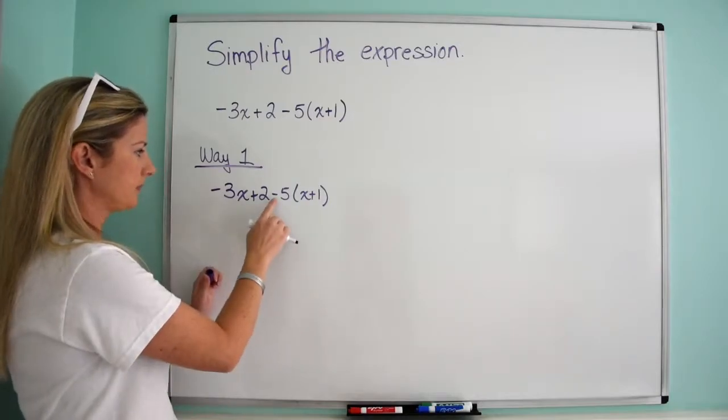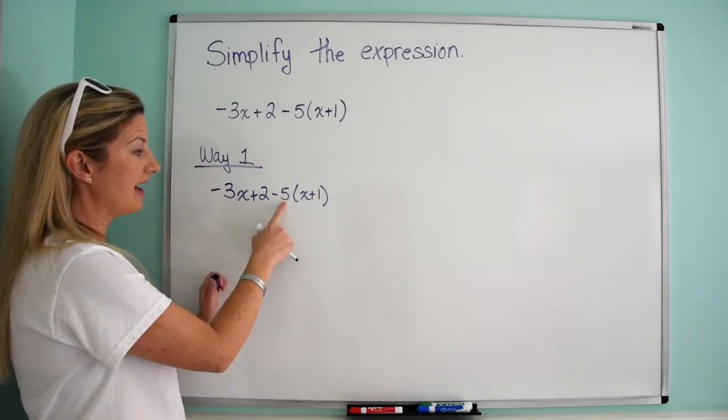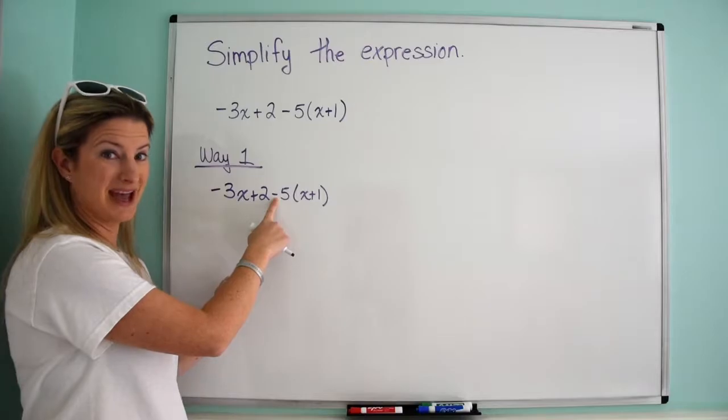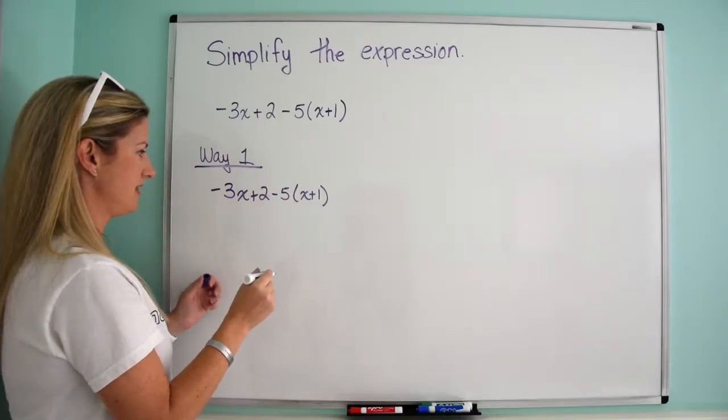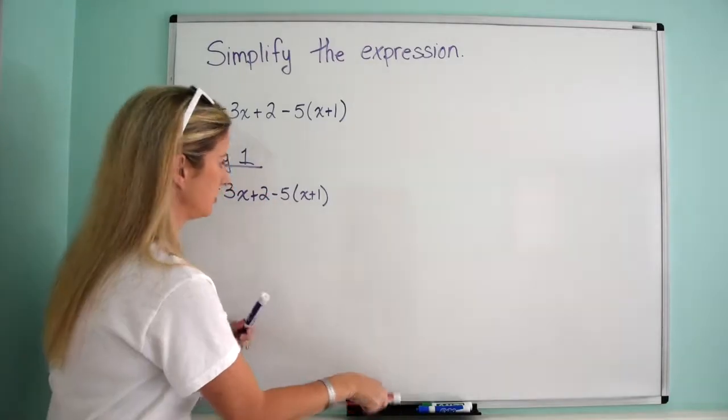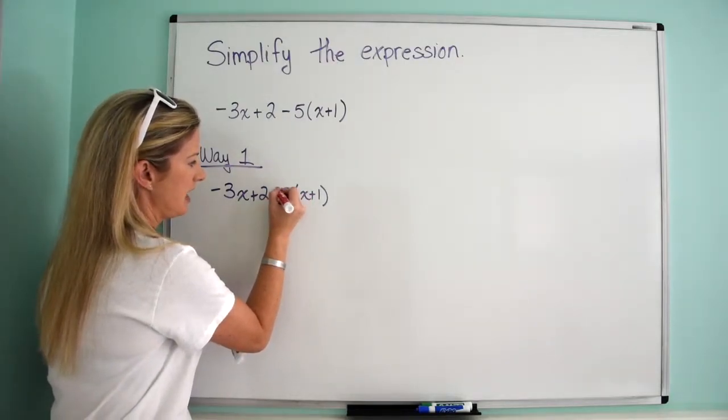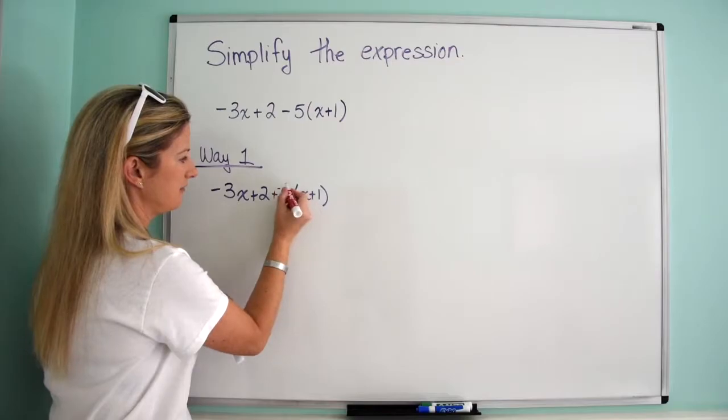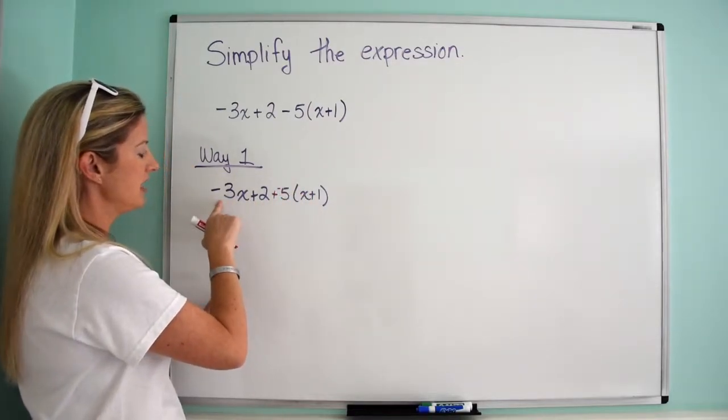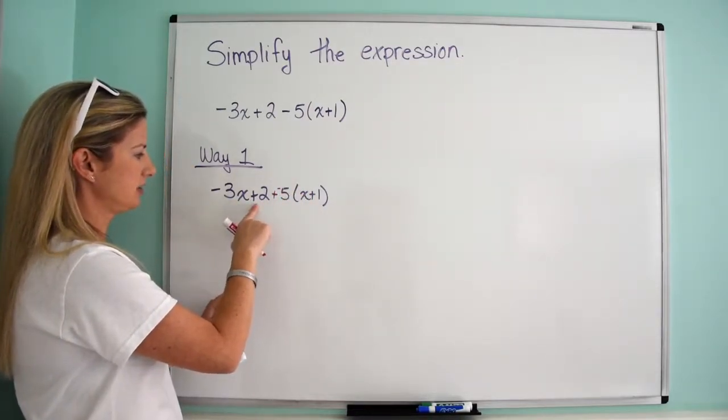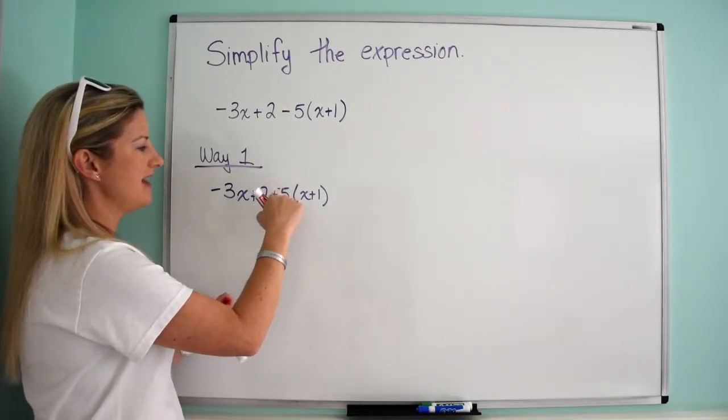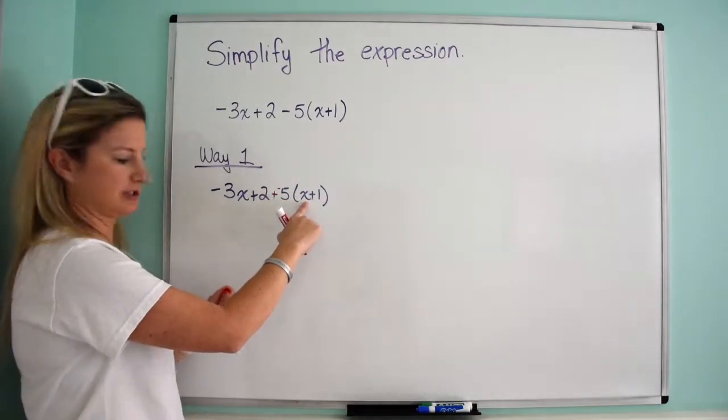What we're going to do is we are going to have the 5 take the negative. And what I mean by this is we are going to change this to a plus sign, and we are going to attach the negative to the 5. So it's negative 5. So it's going to be negative 3x plus 2 plus negative 5 times the quantity x plus 1.